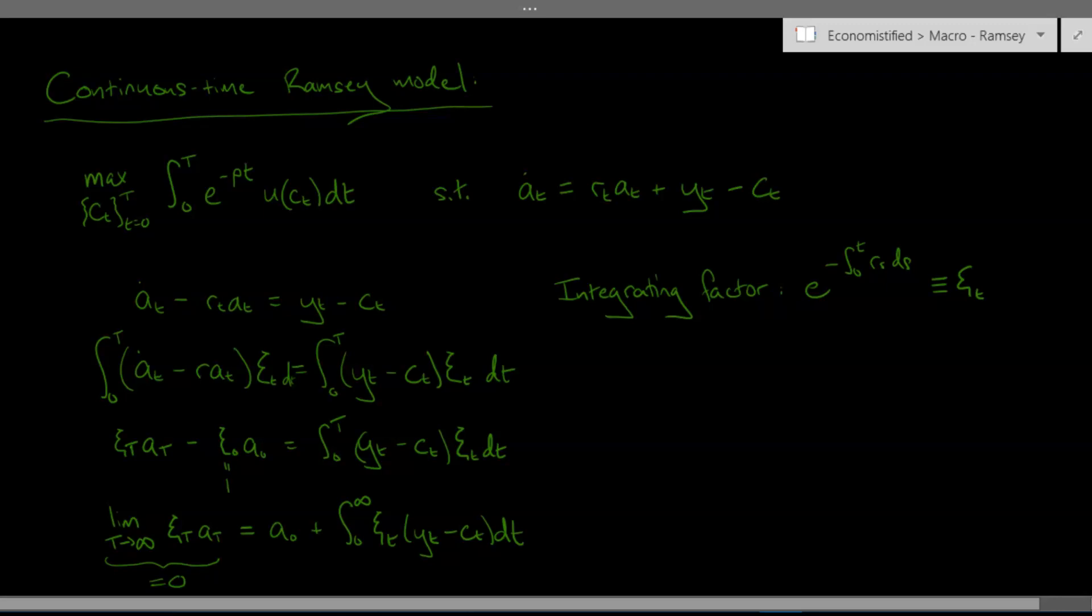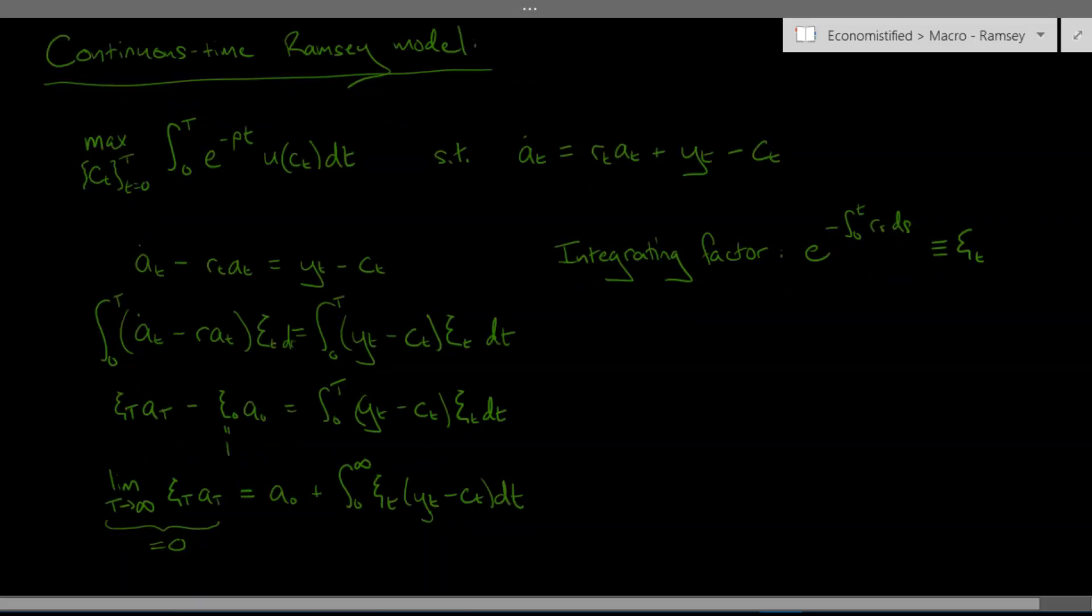it's called the transversality condition you may recognize it and this just says that your wealth should not grow faster than the interest rate. I'm actually not going to do that I'm not going to assume that this is equal to zero instead I'm going to assume it's greater than or equal to zero but this is the no ponzi condition